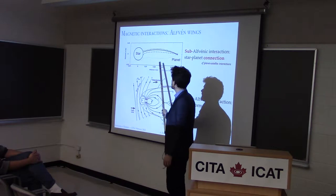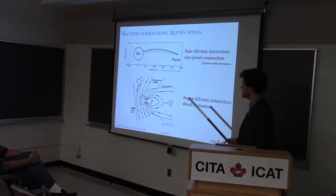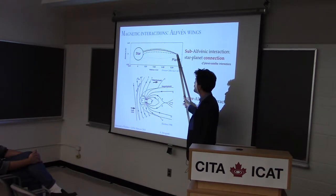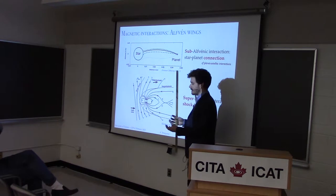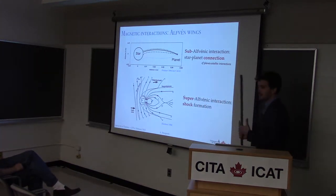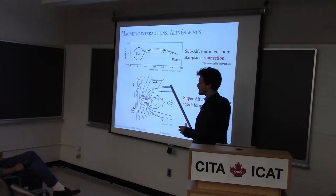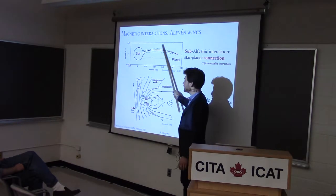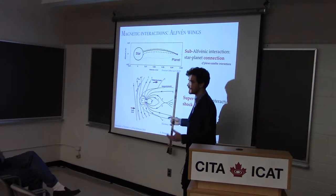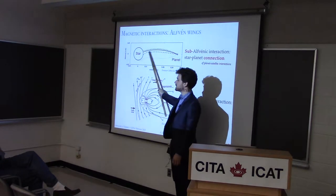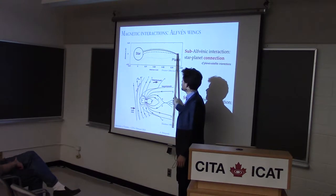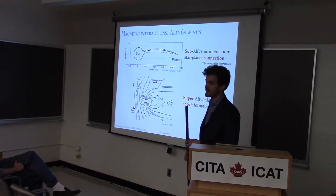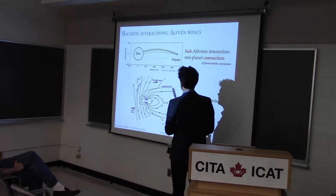One thing particularly interesting is that some of those planets will orbit in what's called the sub-Alfvénic region of the stellar wind, meaning they orbit where the wind velocity is smaller than the local Alfvén velocity. In this case, you can get a direct magnetic connection between the two bodies. This is just a sketch from a paper by Cross et al. 2006: if the planet is in the sub-Alfvénic region, any perturbation the planet induces can propagate down to the star and potentially come back.